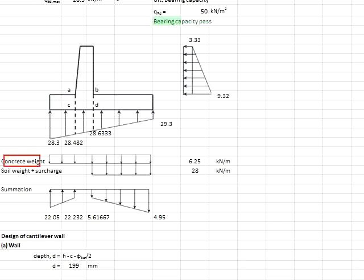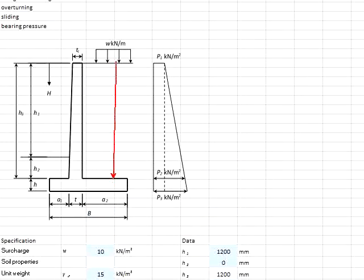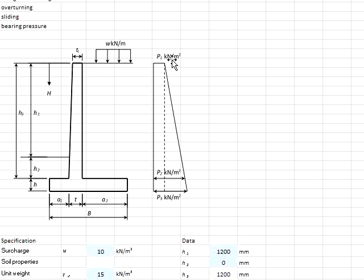Next, you need to determine the concrete weight. The concrete weight is obtained by multiplying the thickness of the base with the unit weight of concrete, which is 25 kN/m³. Then obtain the weight of the soil, which is obtained by multiplying the depth of the backfill with the unit weight of the soil. Lastly, you need to obtain the surcharge; the value can be adopted directly as it is a UDL load.